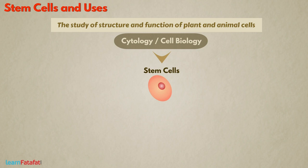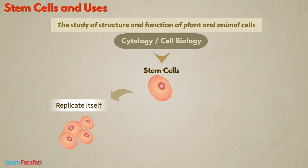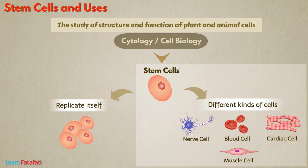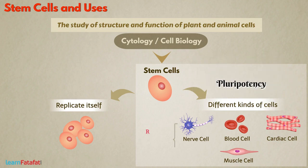Stem cells are a special kind of cells which can replicate themselves as well as produce different kinds of cells in the body. This ability of stem cells to become any type of cell in the body is called pluripotency. It gives rise to different body organs and tissues.